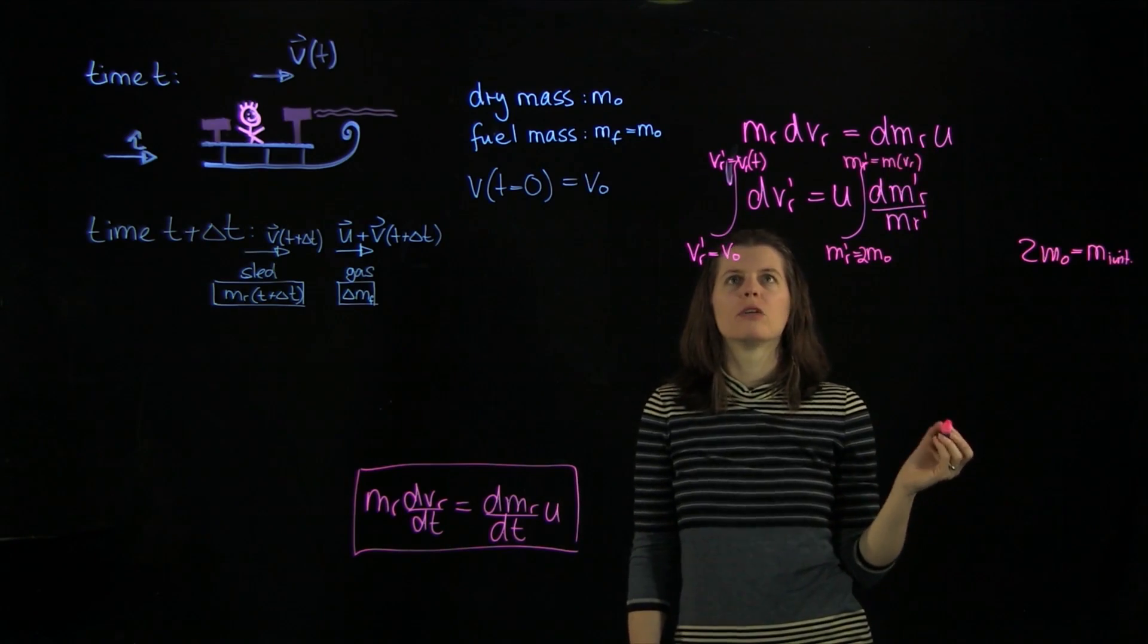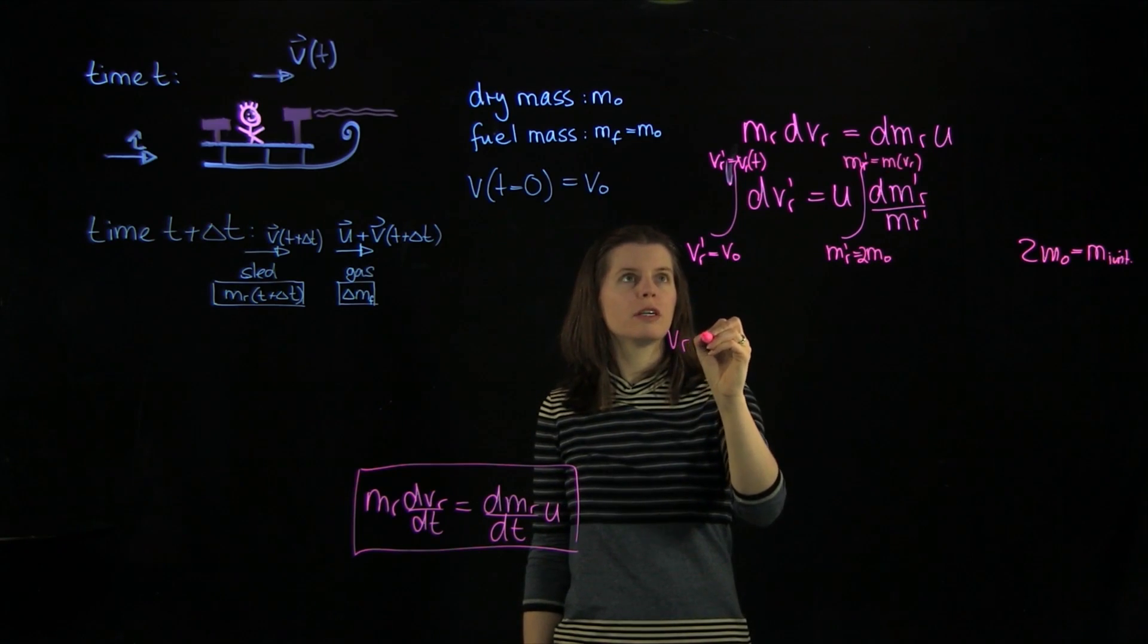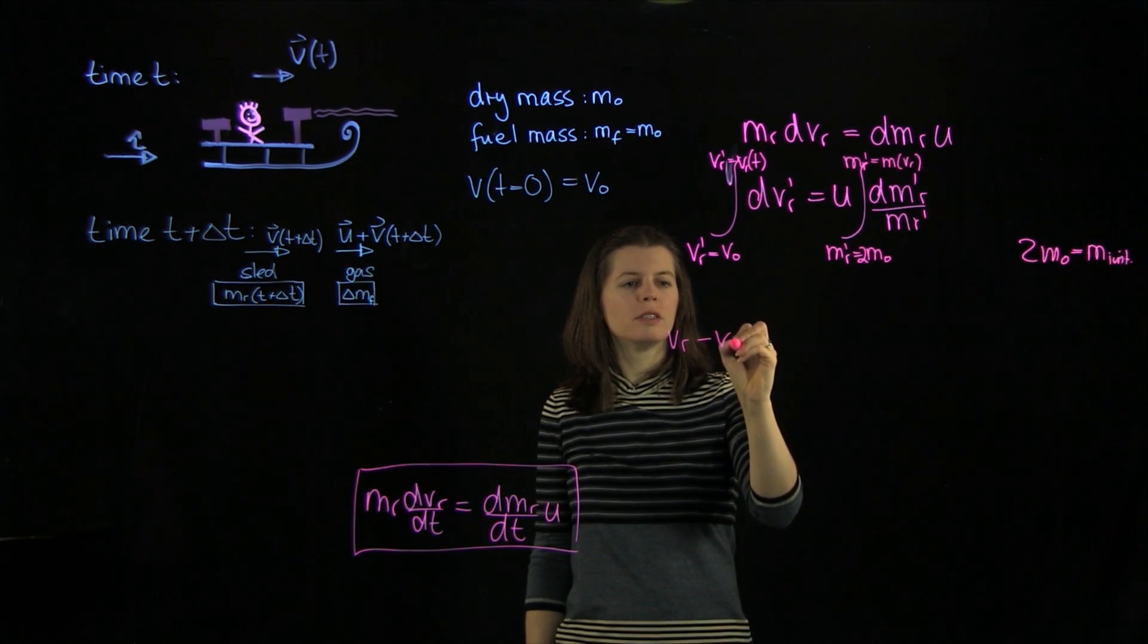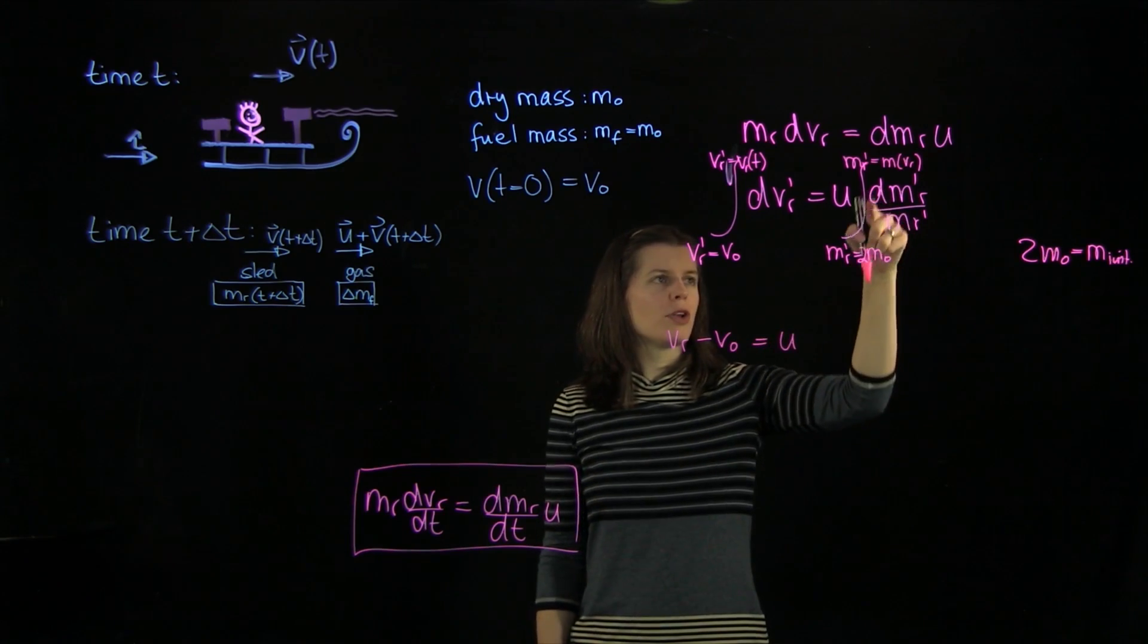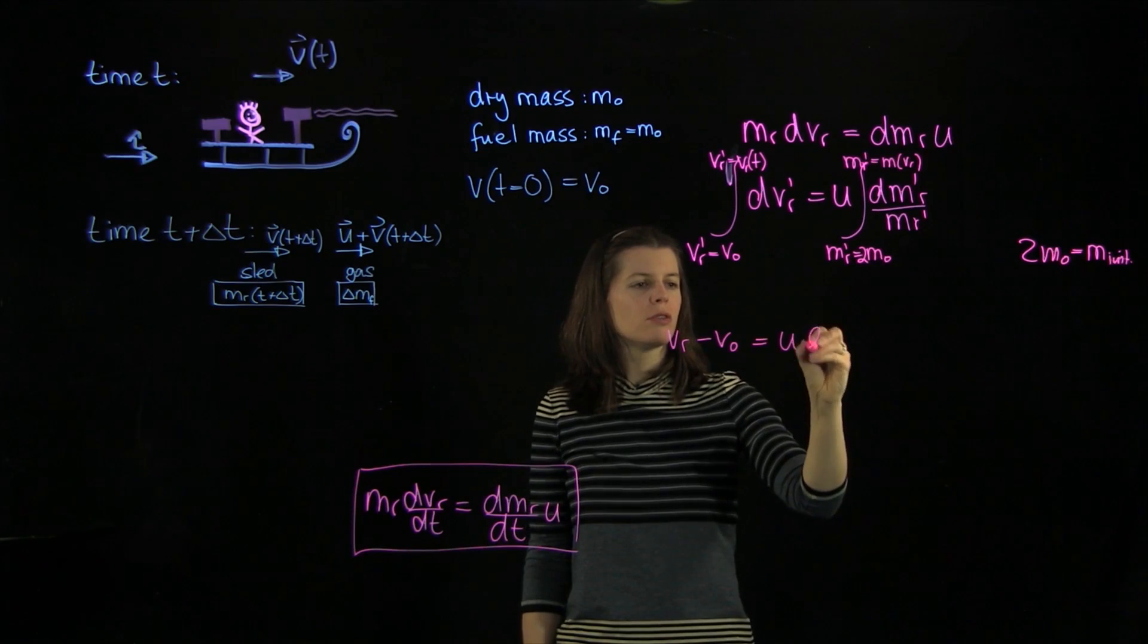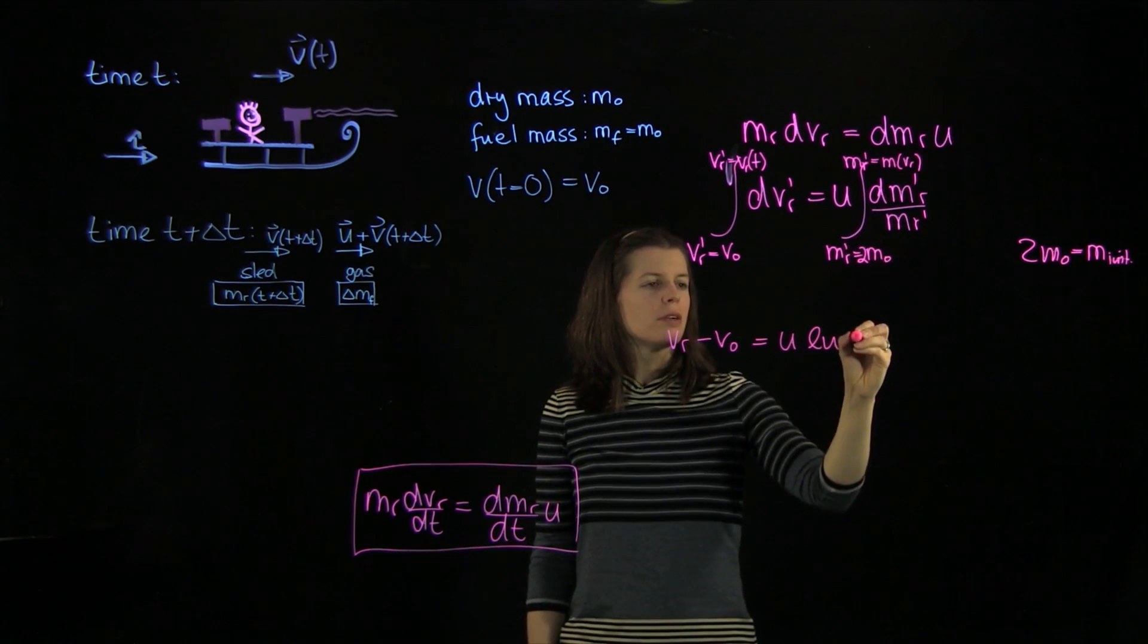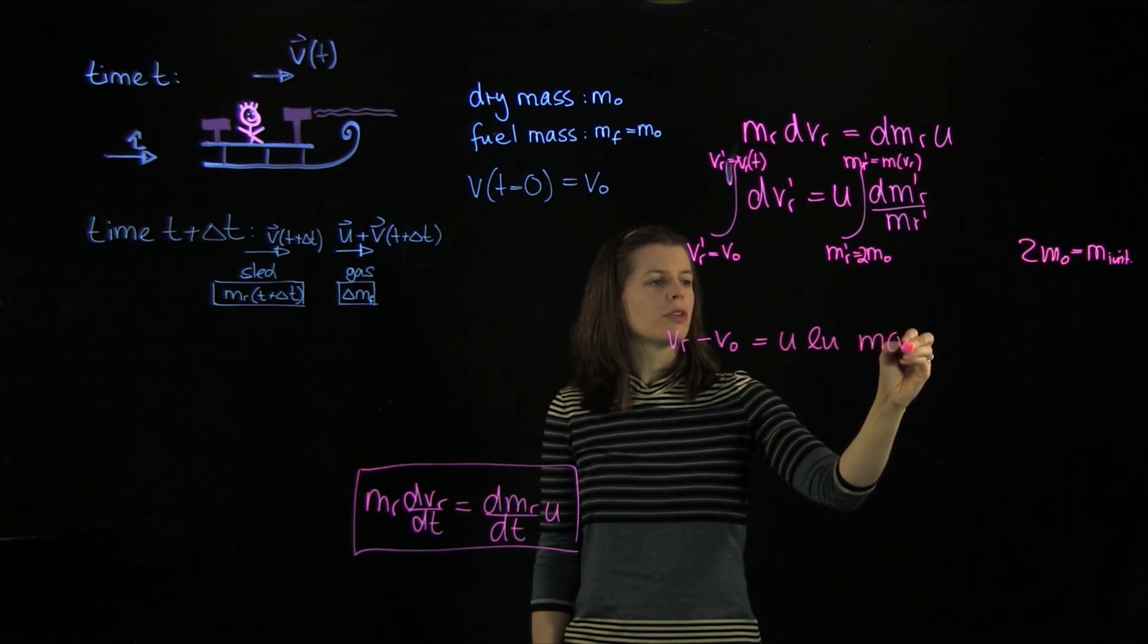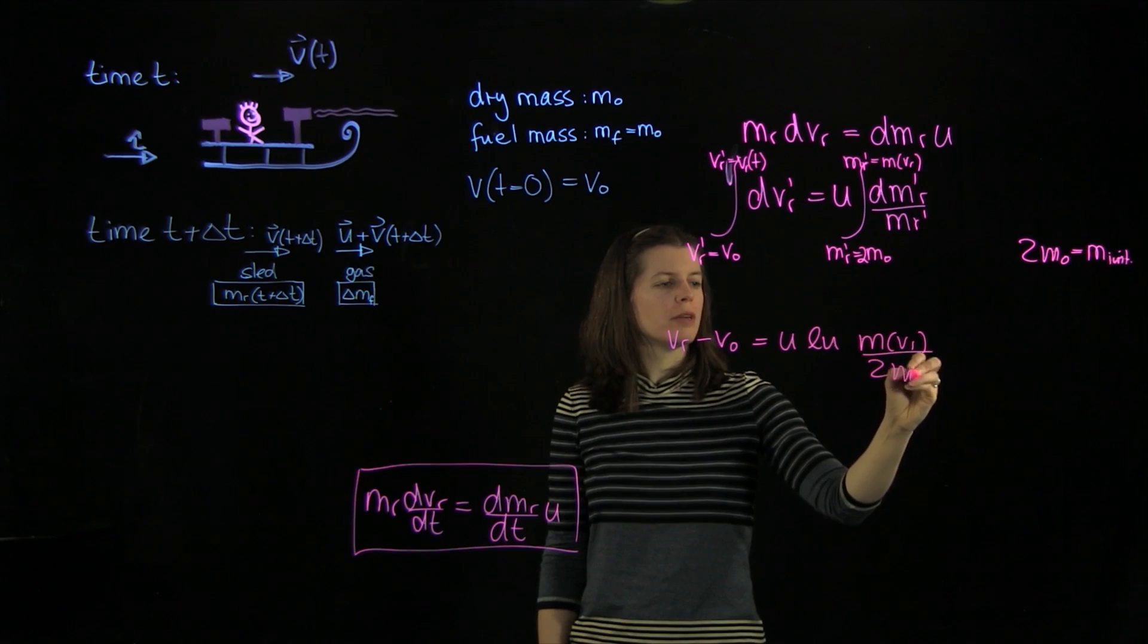All right, so let's do that. We're going to get vr minus v0 equals u, 1 over m. Integrated gives us an ln. So ln, and then we can immediately do this here, over 2m0.